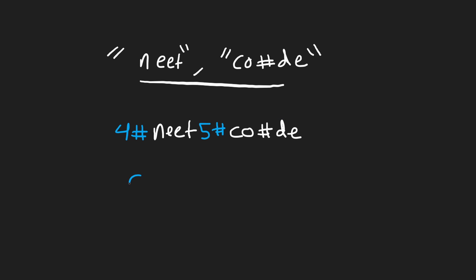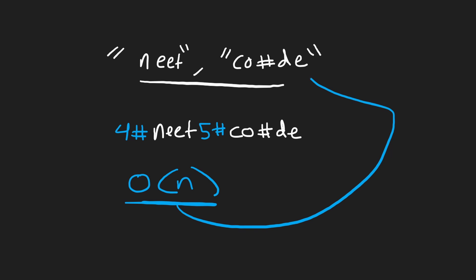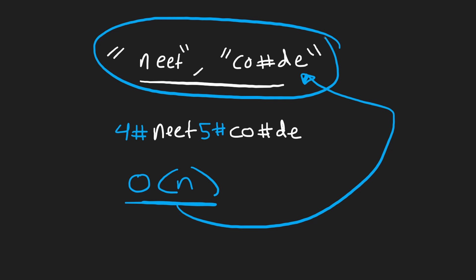The overall time complexity of both encode and decode is O(N), where N is the total number of characters in the list of words.